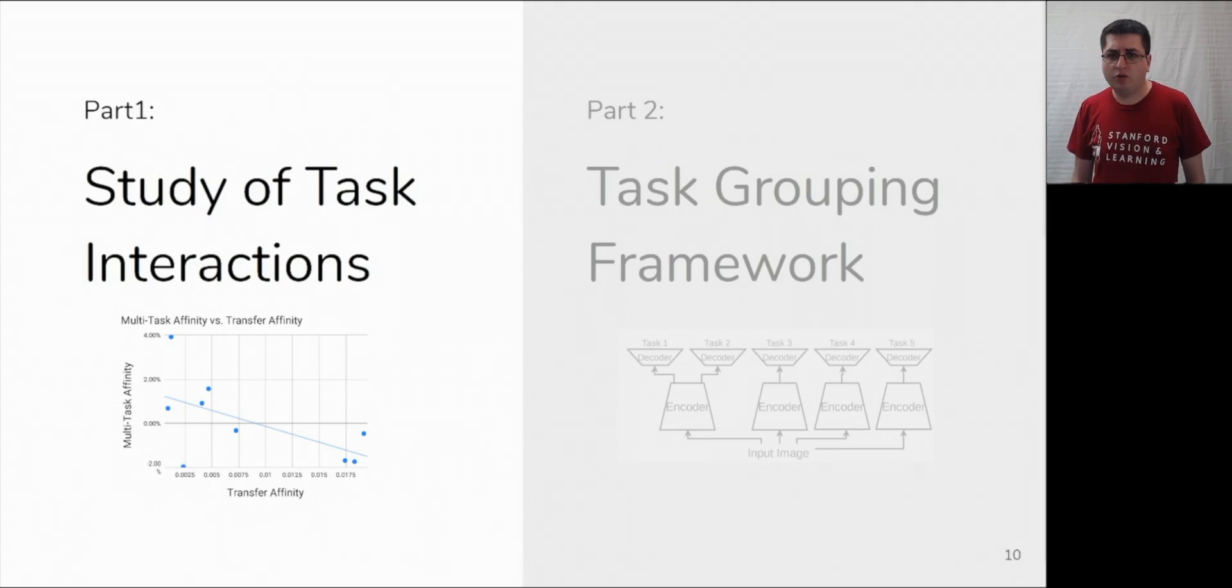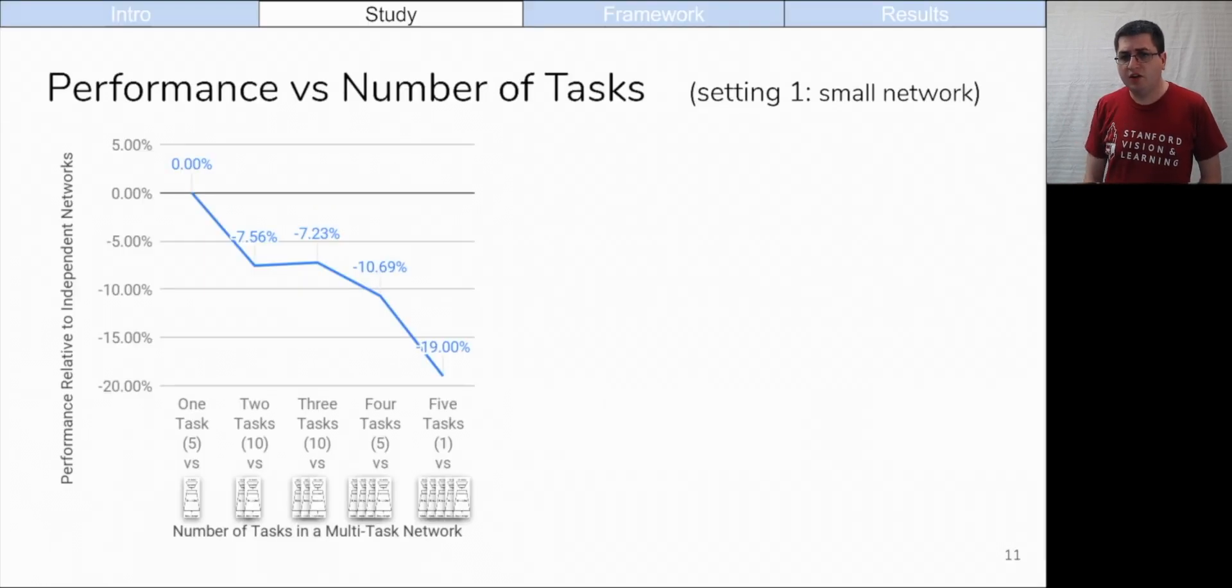In part 1, we will study how tasks interact in multi-task learning. In our first setting, 5 choose 2 of the networks are 2 task networks, 5 choose 3 are 3 task networks, 5 choose 4 are 4 task networks, and there is a single 5 task network, 5 choose 5.